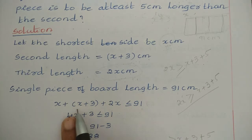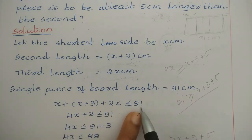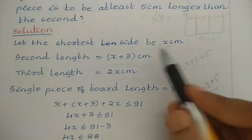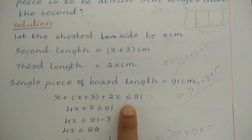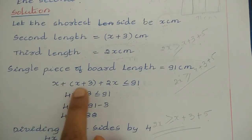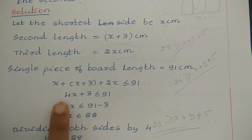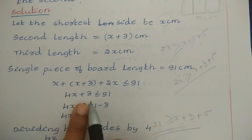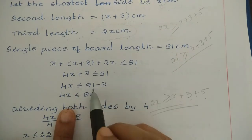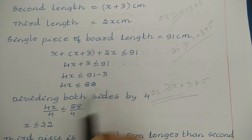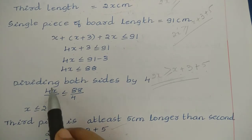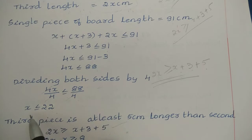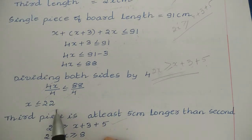The total board length is 91 cm. Adding all three pieces: x + (x + 3) + 2x ≤ 91. Simplifying: 4x + 3 ≤ 91, so 4x ≤ 88. Dividing both sides by 4: x ≤ 22. So the shortest piece length satisfies x ≤ 22.